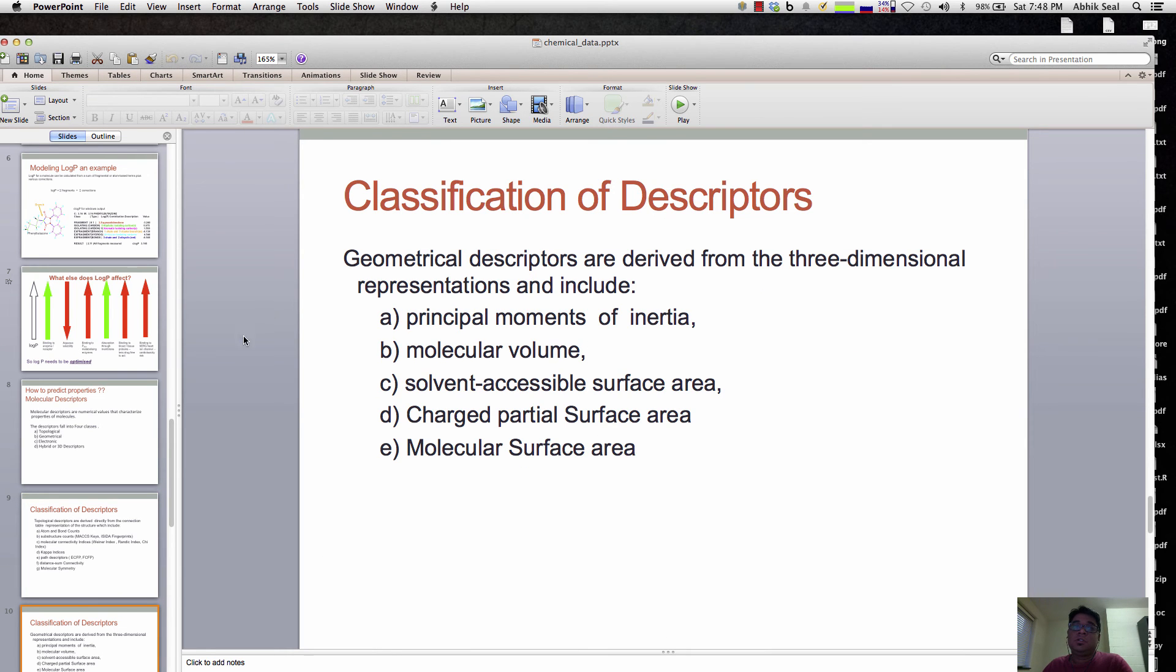There are other descriptors, like geometrical ones which represent the three-dimensional representation of molecules. Descriptors that take into account the principal moments of inertia, molecular volume, solvent accessible surface area, charge partial surface area, and molecular surface area. These are the geometrical descriptors mostly people use in calculating different properties or making predictive models.